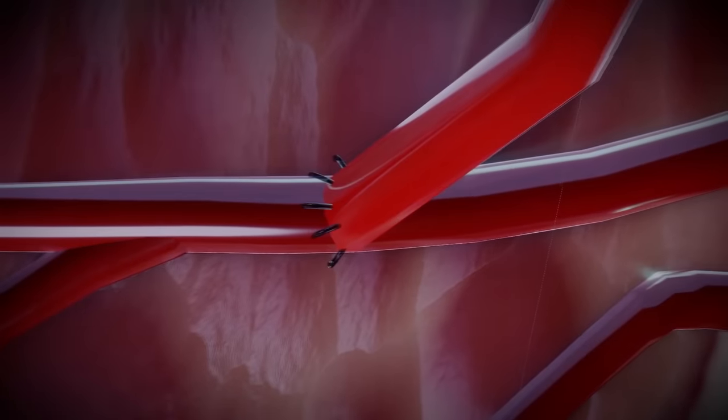For the internal thoracic artery graft, the surgeon will leave the upper end attached to the subclavian artery and bypass the lower end of the chest wall to the coronary artery just beyond the blockage. Then, the surgeon will sew the graft in place.